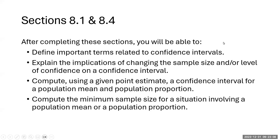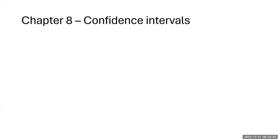Our objectives with these two sections from Chapter 8 are to first define some important terms related to confidence intervals, explain the implications of changing the sample size and/or level of confidence on a confidence interval, compute using a given point estimate a confidence interval for a population mean and population proportion, and compute the minimum sample size for a situation involving a population mean or population proportion. So a lot of the things we do here with means we're going to repeat with proportions — lots of computations.